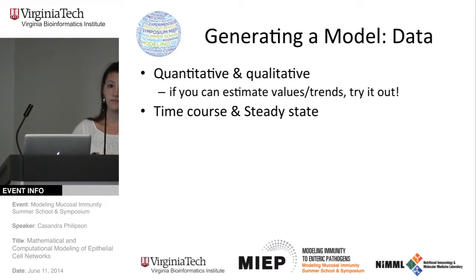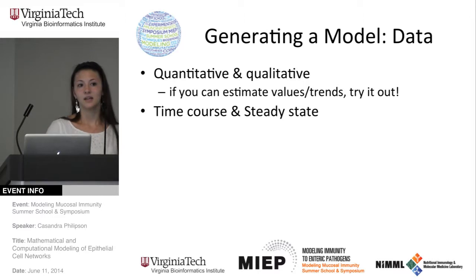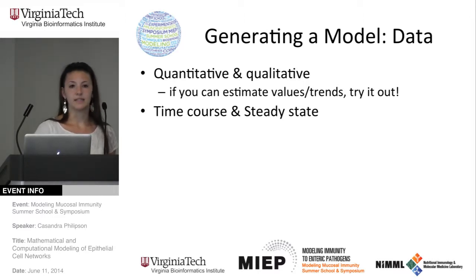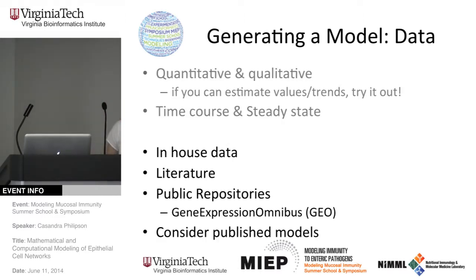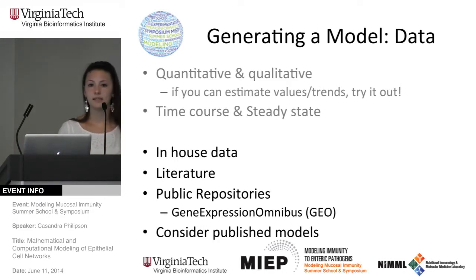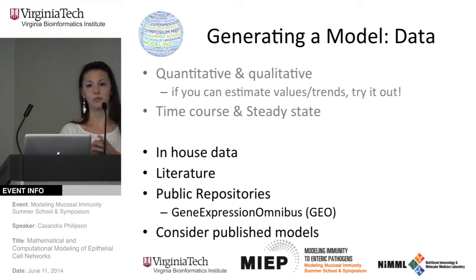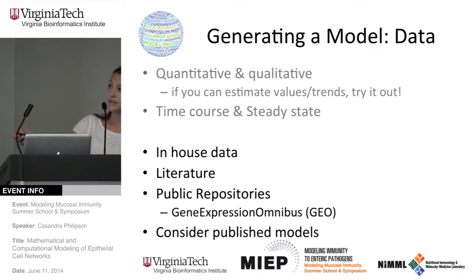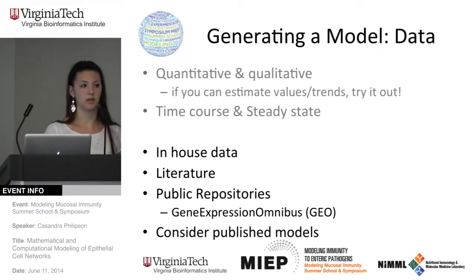If you only have one time point, that's okay — you can put it into an Excel database and calibrate what's called a steady state model. You can ask questions like: what's the difference between the steady state of an infected versus uninfected cell, or treated versus untreated? You can generate your own data, search the literature, use public repositories. We've been using a lot of GEO data because that high-throughput data is very nice — huge databases in time course format. If you don't have data and you're trying to make a model, go online and search for what others have already done.